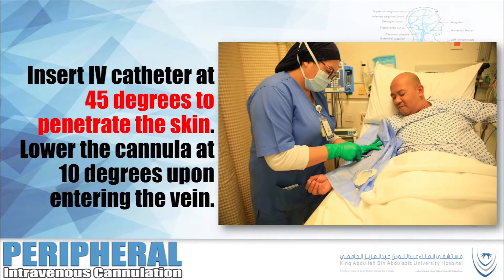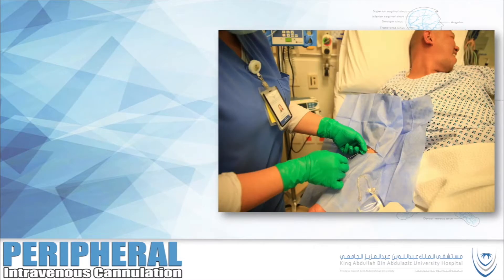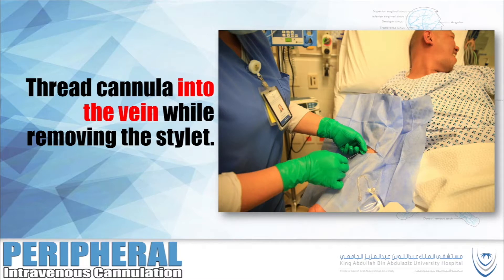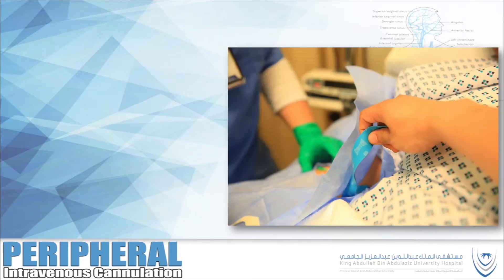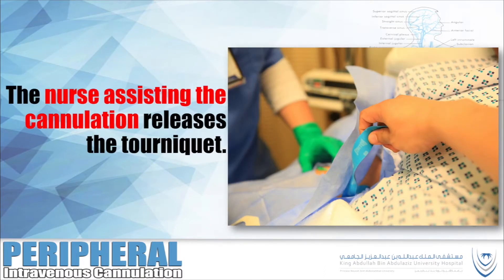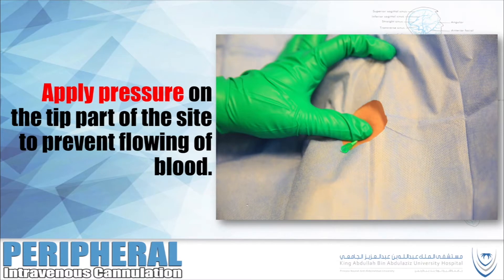Insert the IV catheter at 45 degrees to penetrate the skin, then lower the cannula to 10 degrees upon entering the vein. Observe for backflow of blood. Thread the cannula into the vein while removing the stylet. Place the stylet into the sharps container. The nurse assisting the cannulation releases the tourniquet. Apply pressure on the tip part of the site to prevent flowing of blood.